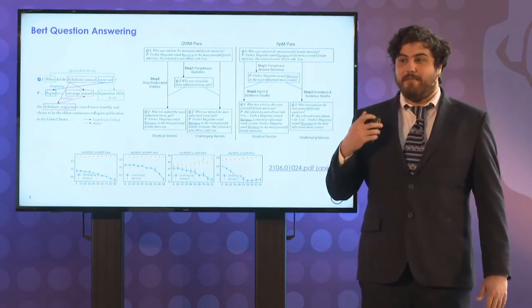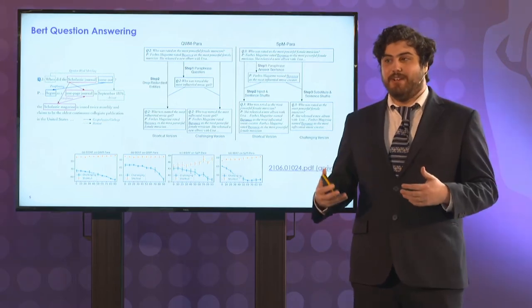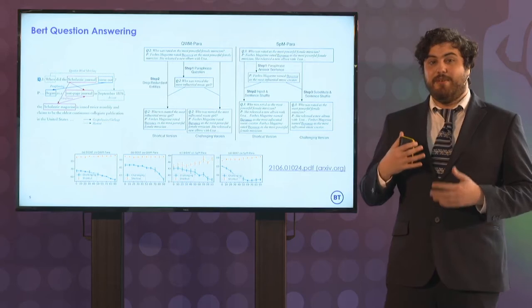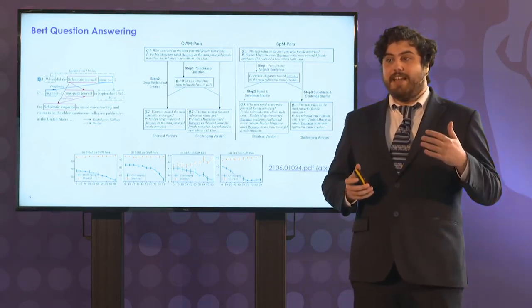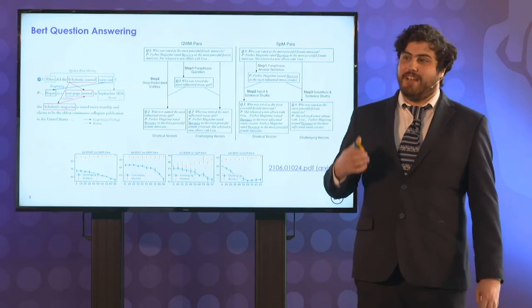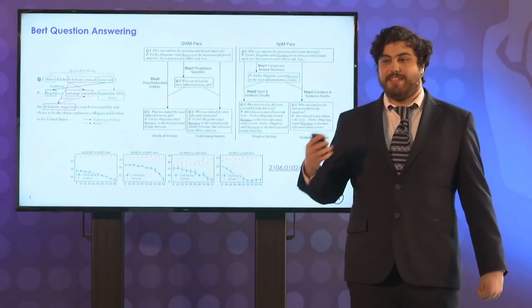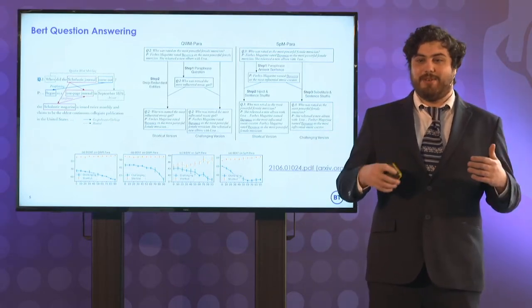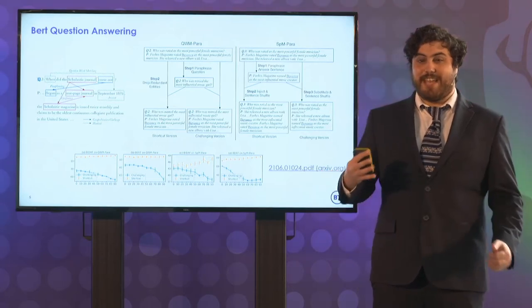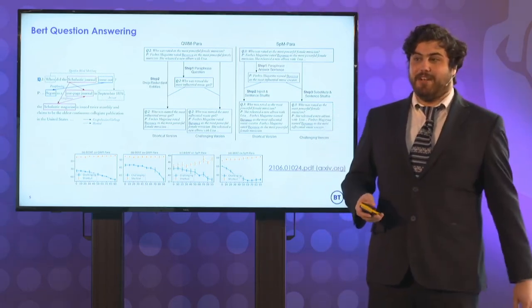And some researchers proved this by creating, essentially, questions that could be shortcut, and a very similar question that was a more challenging version. So by paraphrasing the question, changing the words in the question so those exact words couldn't be found in the text, and having some examples that had additional references. So in the example on the right, we have who was raised to the most powerful female musician, and the passage of text is about Beyonce, and then there's another artist in the text referenced as Lisa. So in the shortcut version, that's not present. And when these models are tested on the versions that can be shortcut and the challenging versions, the models perform far better on the versions that can be shortcut, indicating that a large part of what the models learned is essentially how to shortcut to the answer and not the underlying logic about how to answer these questions.